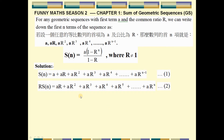Then I perform the operation: equation 1 minus equation 2. The left hand side becomes S_N minus R times S_N. On the right hand side, AR minus AR is 0, AR squared minus AR squared is also 0, and so on. The term AR to the power N minus 1 minus AR to the power N minus 1 is also 0, and the last remaining term is minus AR to the power N.